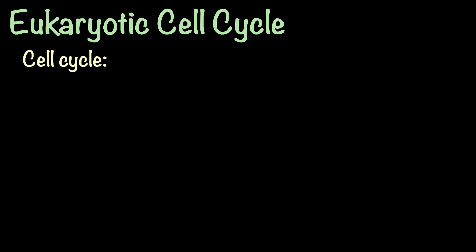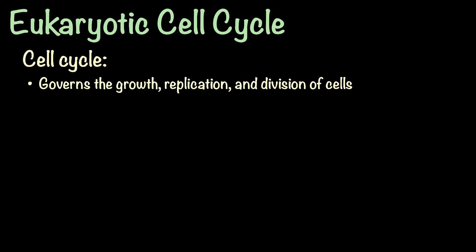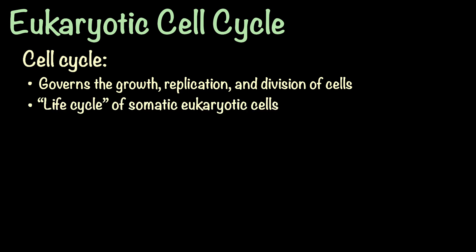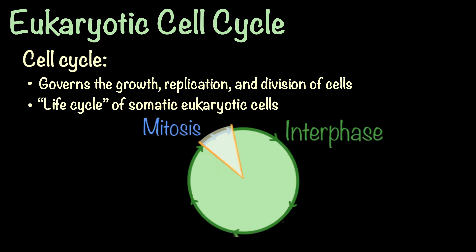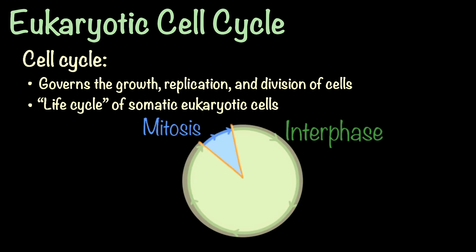The cell cycle is a fundamental process that governs the growth, replication, and division of eukaryotic somatic cells. It can be thought of as their life cycle. The eukaryotic cell cycle can be divided into two stages: interphase and mitosis. In this video, we'll focus on the details of interphase, which is the longest phase of the cycle where cells conduct their daily activities and prepare for division.